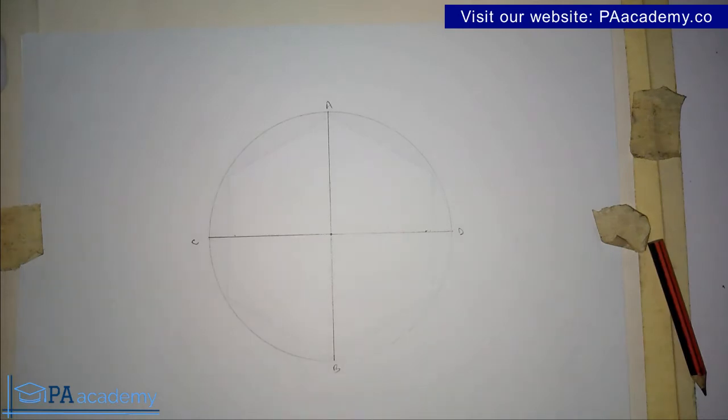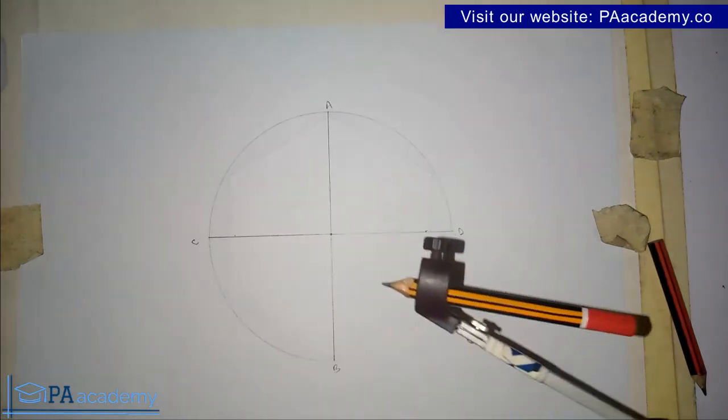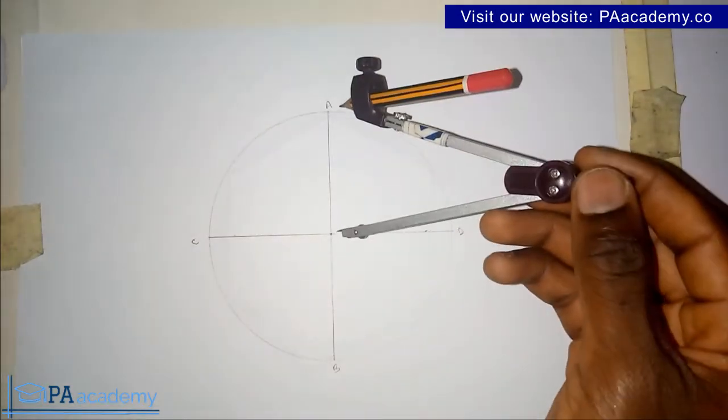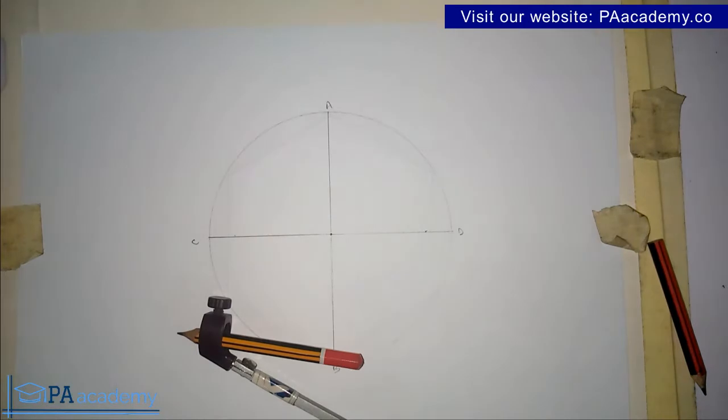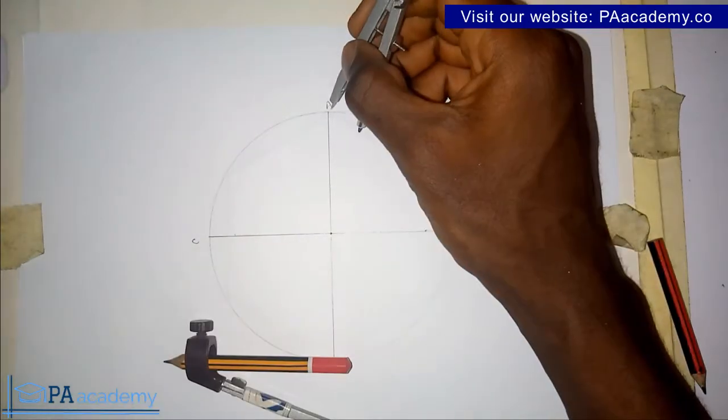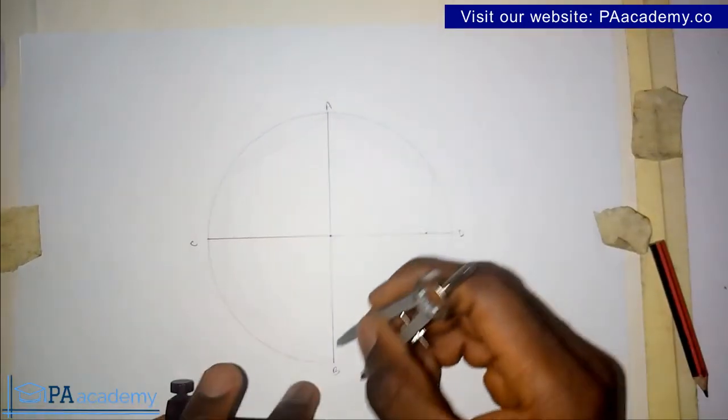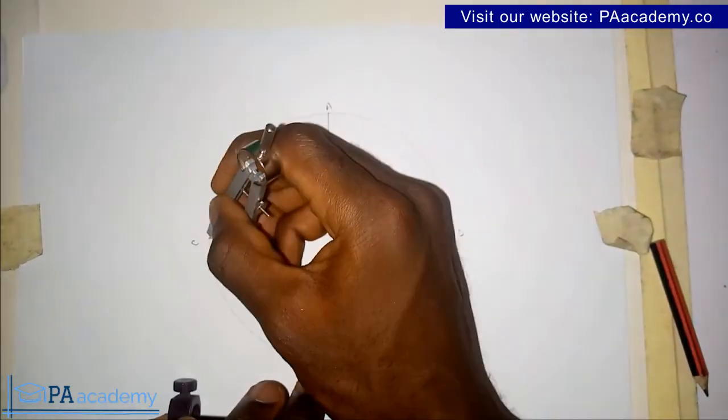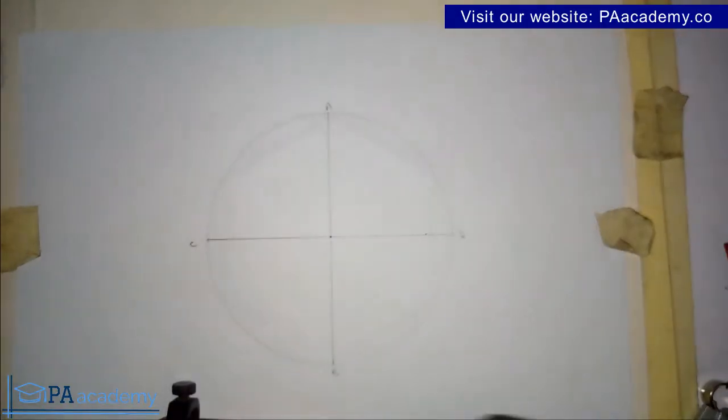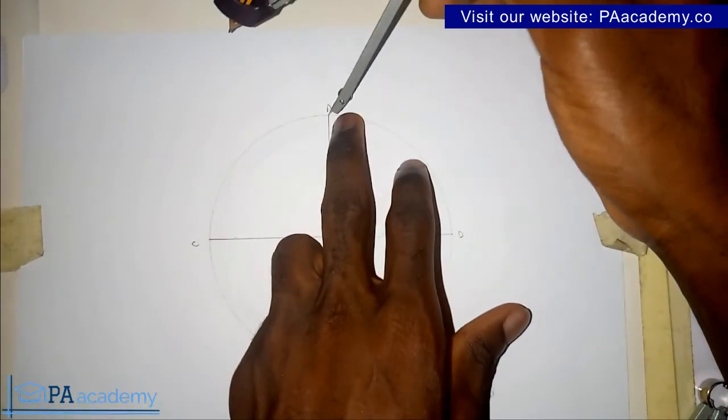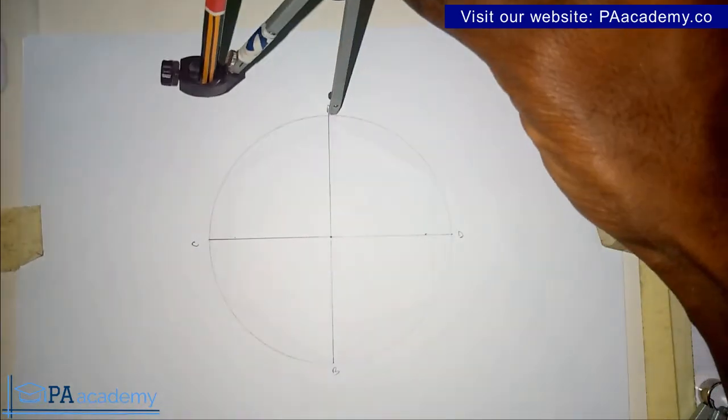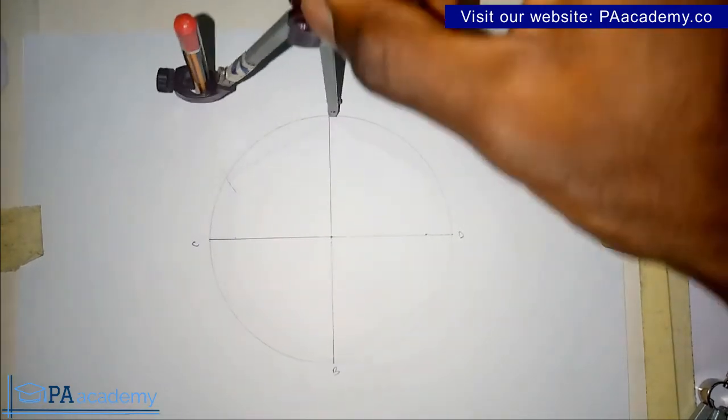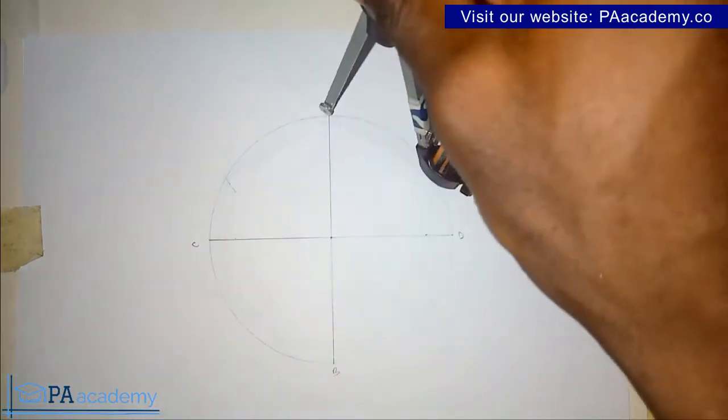Now we bring back our compass with the same radius that we used in drawing the circle. Don't forget this is a radius of 6 cm. With the same radius, we're going to place it on point A, B, all these four points. Let's start with point A. From point A, you put your compass with the same radius and draw an arc, then go to the other part of the circle and draw an arc.